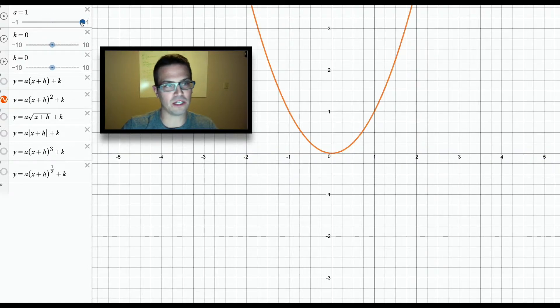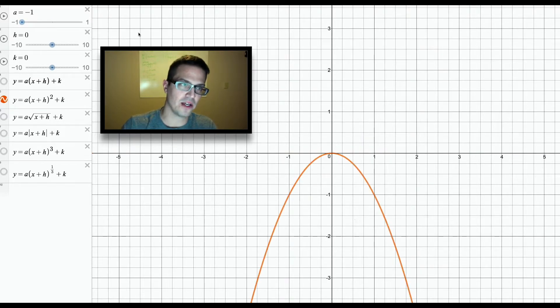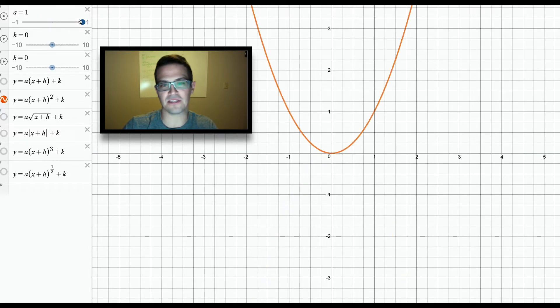Here's one, so that's the standard quadratic. And then if you actually turn it to negative one, it starts pointing downward. So that a value, whatever this value is in front, if it's negative, it's going to be pointed downward. If it's positive, it's going to be pointed upwards. That's that first transformation.